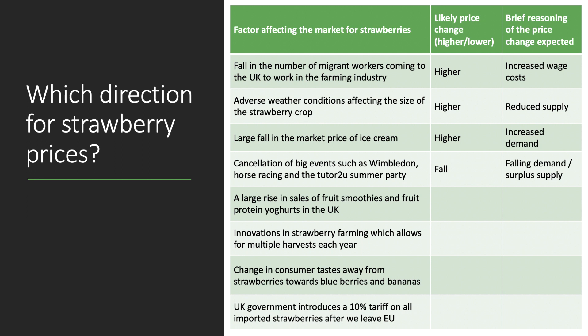Factor five: a large rise in sales of fruit smoothies and fruit protein yogurts in the UK, which are becoming increasingly popular. We think the price of strawberries would go up, because there's a growing demand for smoothies and protein yogurts, and strawberries are used as an ingredient in those. We call this derived demand — if people are buying more strawberry yogurt, that leads to increased derived demand for strawberries.